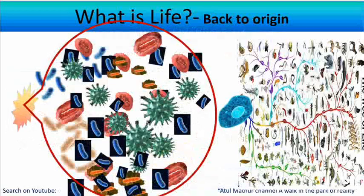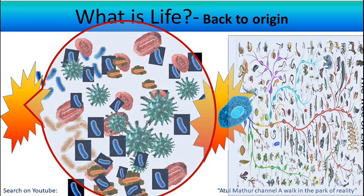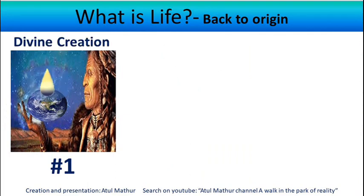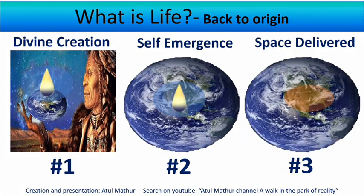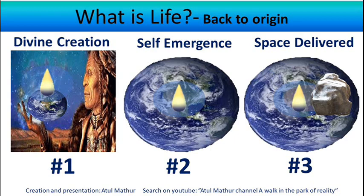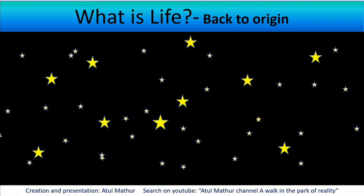So the short answer is: we do not know yet how life originated. Apart from the theory of a divine being creating life, there are theories of life emerging spontaneously from special conditions on Earth — but today all these theories lack critical evidence and are unable to make testable predictions. Another theory is of microbial life arriving on Earth from space through meteorites. If this turns out to be true, it would mean life was never created from scratch on Earth — it was home delivered — and the search for its origin extends into the vastness of space.